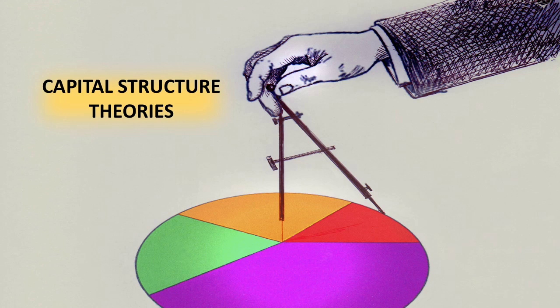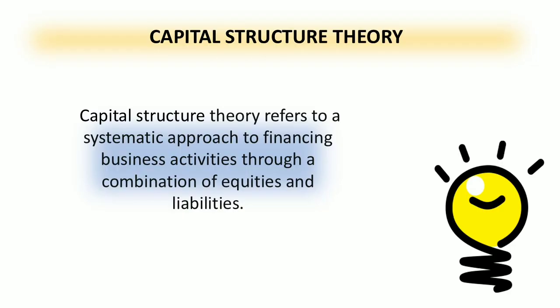As you explore this video presentation, you will obtain another relevant chunk of financial management that will help you become competitive in managing financial aspects of the company. You will encounter technical terminologies used in financial management, so I highly recommend that when you encounter technical terms, you revisit our previous presentations or study the terms right away. Let us begin by defining capital structure theory: it refers to a systematic approach to financing business activities through a combination of equities and liabilities.